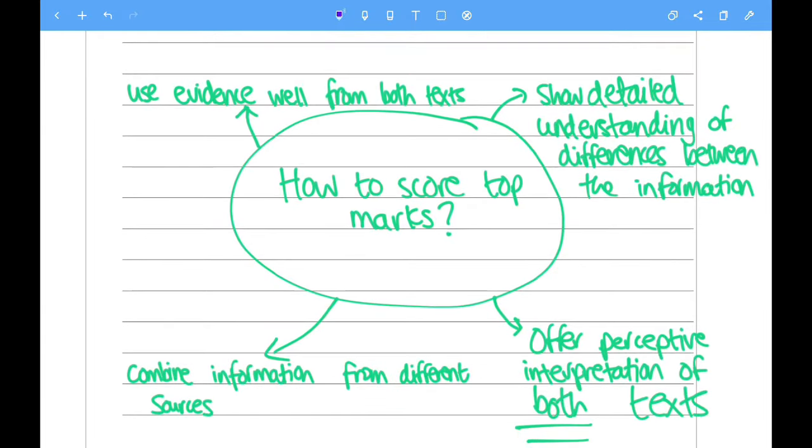How to score top marks. What do you have to do to score the top marks for this question? First of all, use evidence well from both texts. Second of all, show detailed understanding of differences between the information. So that's very important.